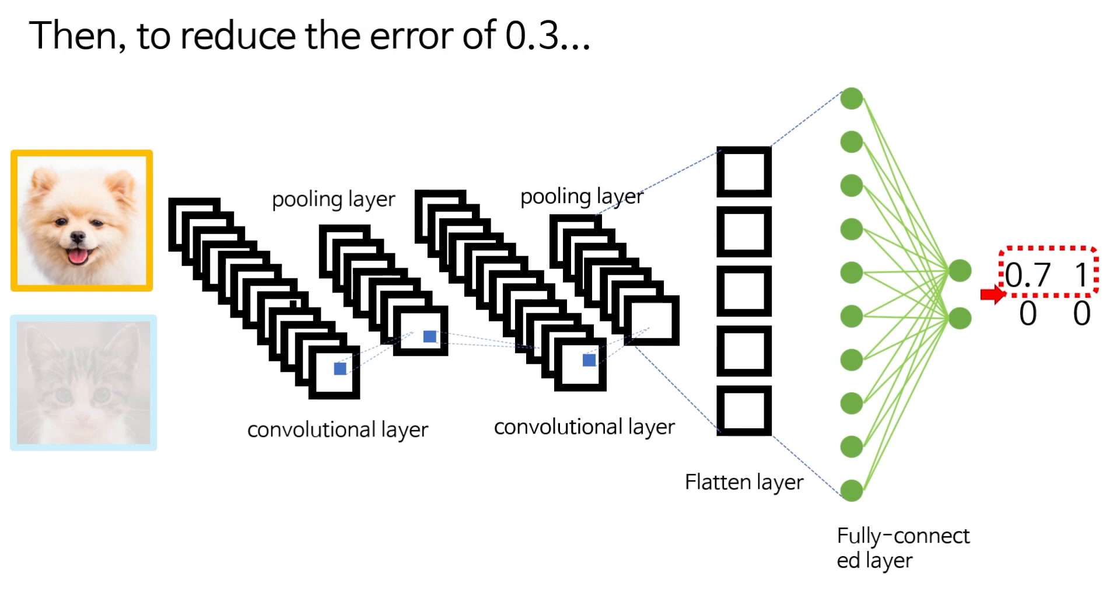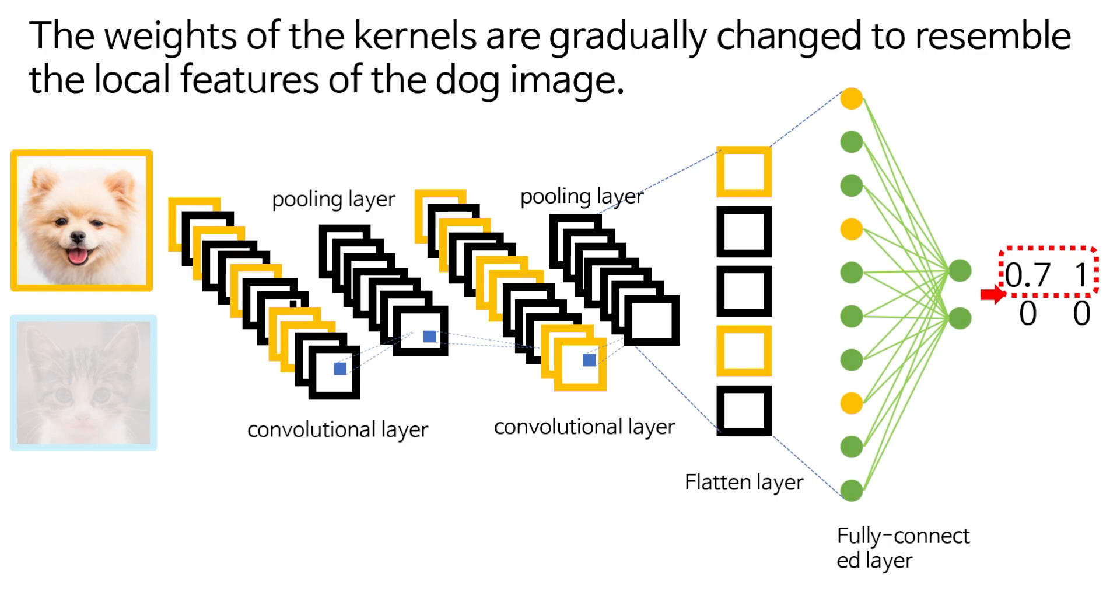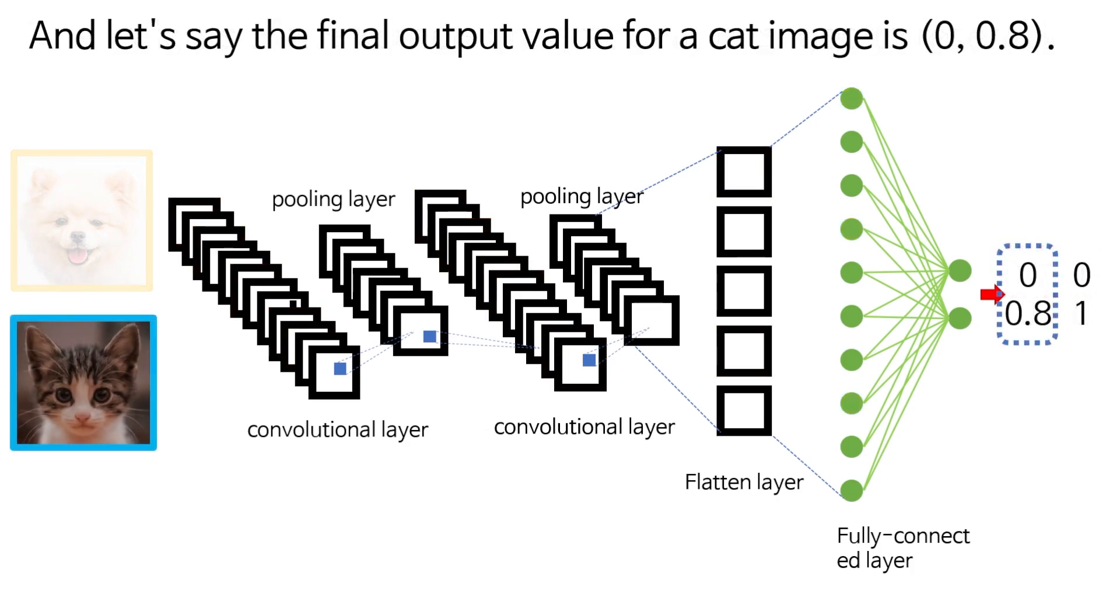Then to reduce the error of 0.3, the weights of the kernels are gradually changed to resemble the local features of the dog's image. Of course, backpropagation and gradient descent methods are used for the kernel weight change algorithm.